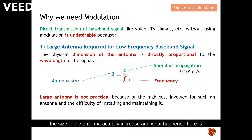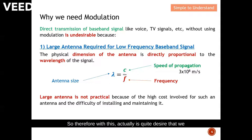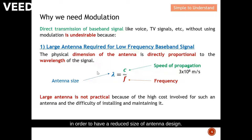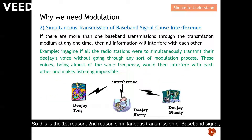You can imagine how big your mobile phone antenna would be. Therefore, it is desirable to increase the frequency as much as possible in order to have a reduced antenna size. This is the first reason. The second reason: simultaneous transmission of baseband signals typically causes interference.